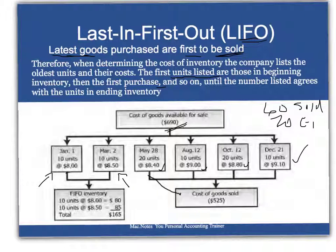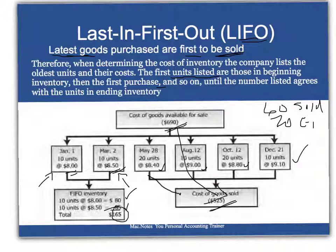What we paid for the beginning units was $8, so that's $80 for those, and $85 for the March units. So under LIFO, the ending inventory is $165, and the cost of goods sold is $525 — that is, $690 minus $165.